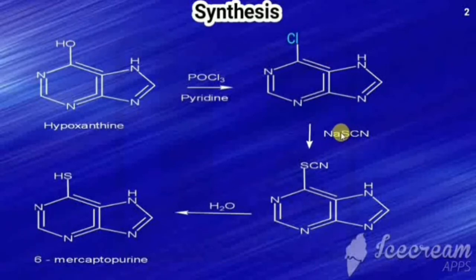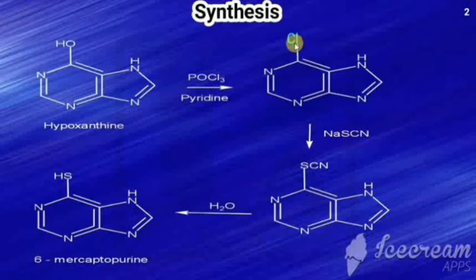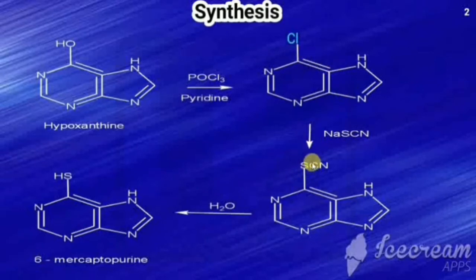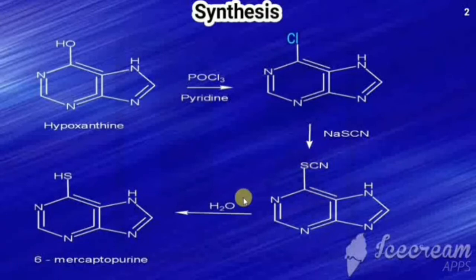The chloro intermediate is then reacted with NaSCN (sodium thiocyanate). Na combines with Cl, which is removed as NaCl, and the SCN group replaces the Cl. On hydrolysis, the CN portion is hydrolyzed and removed, leaving only the SH group.